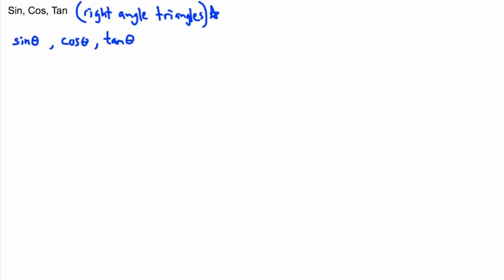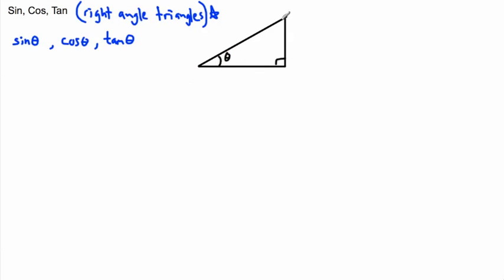Let's start with a drawing — I think it helps to have a drawing of a triangle. I'll draw a right angle triangle here. This one is 90 degrees, so it's a right angle triangle. Now, whichever side is opposite to the right angle is called the hypotenuse — that's the longest side.